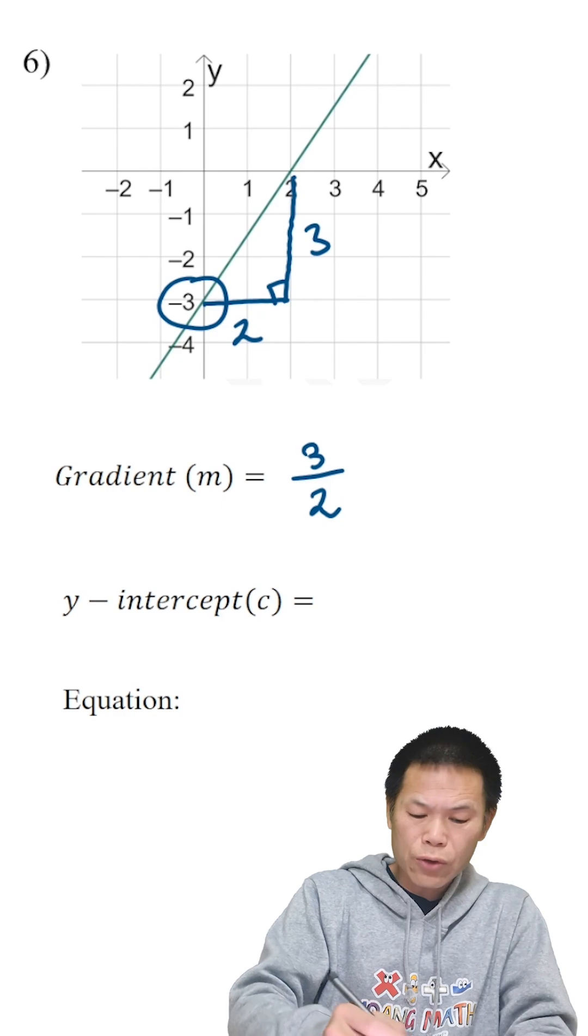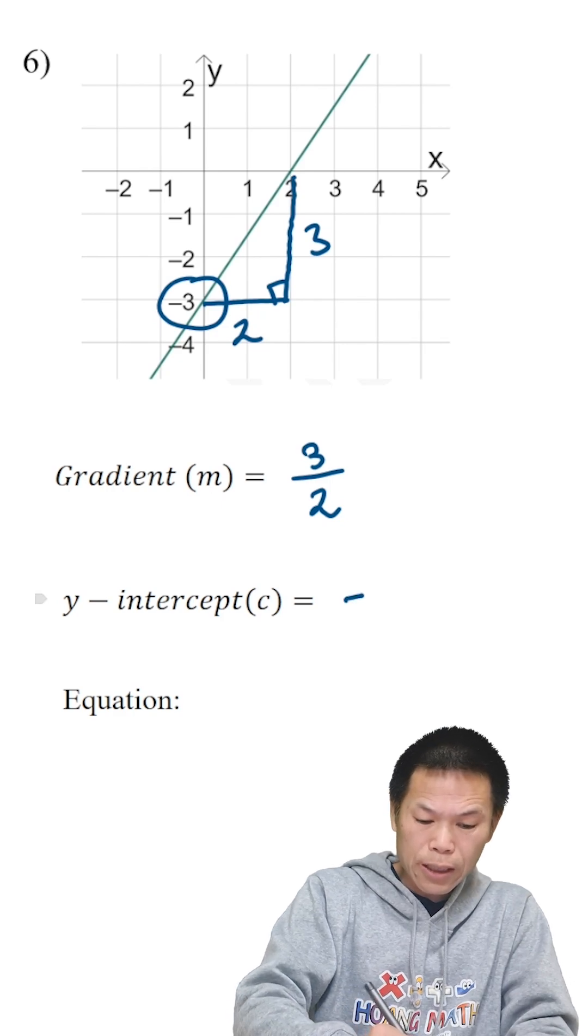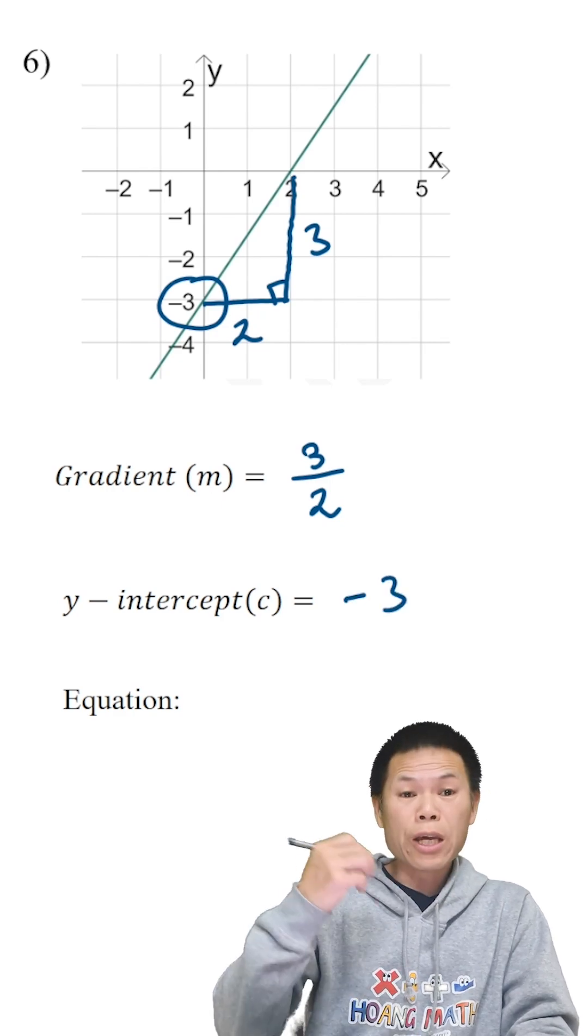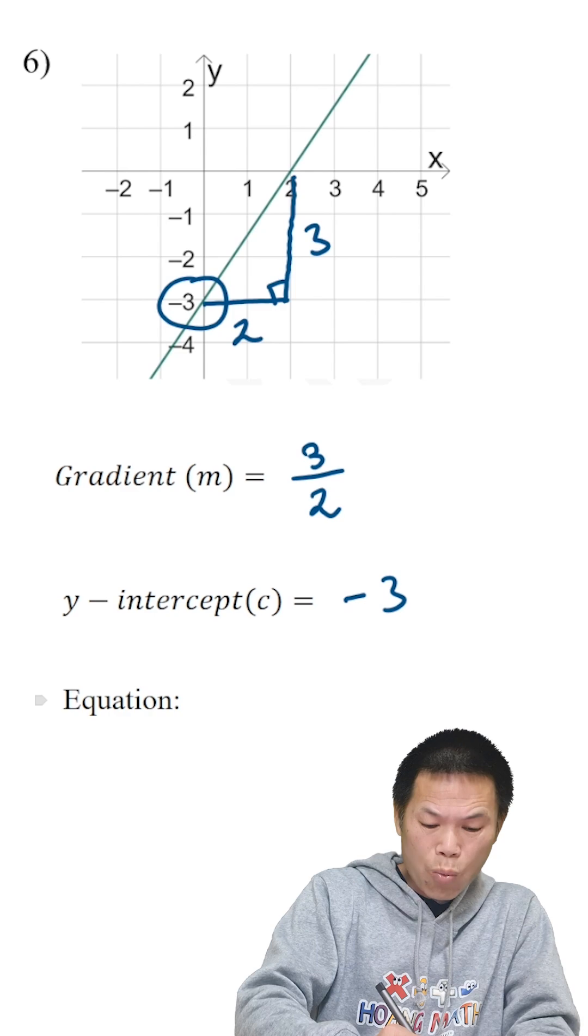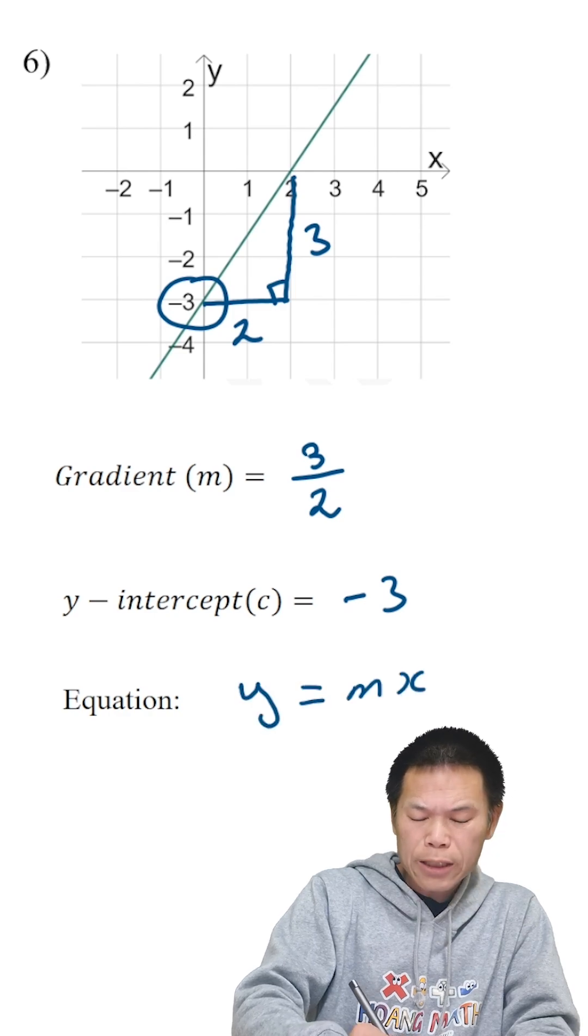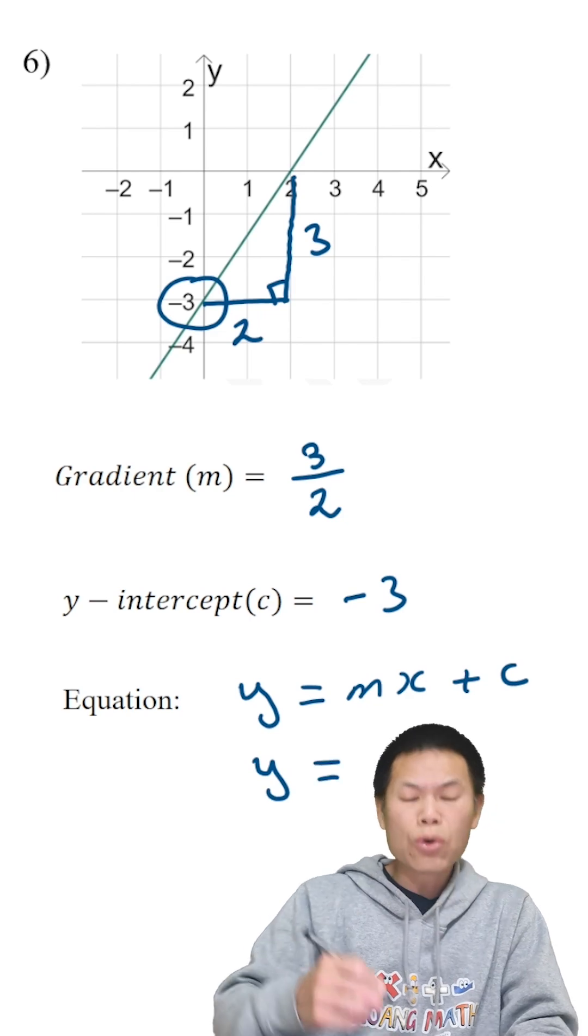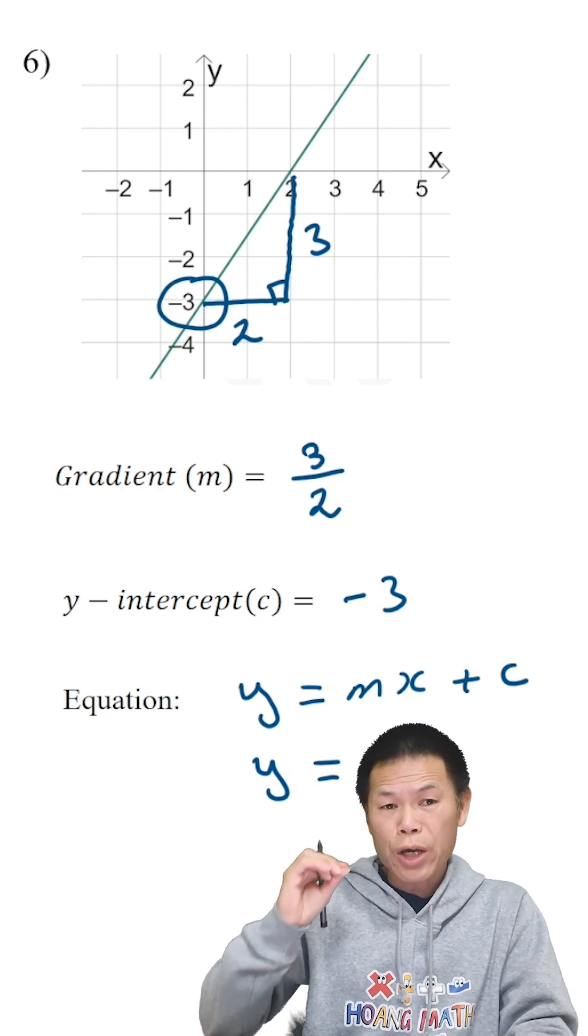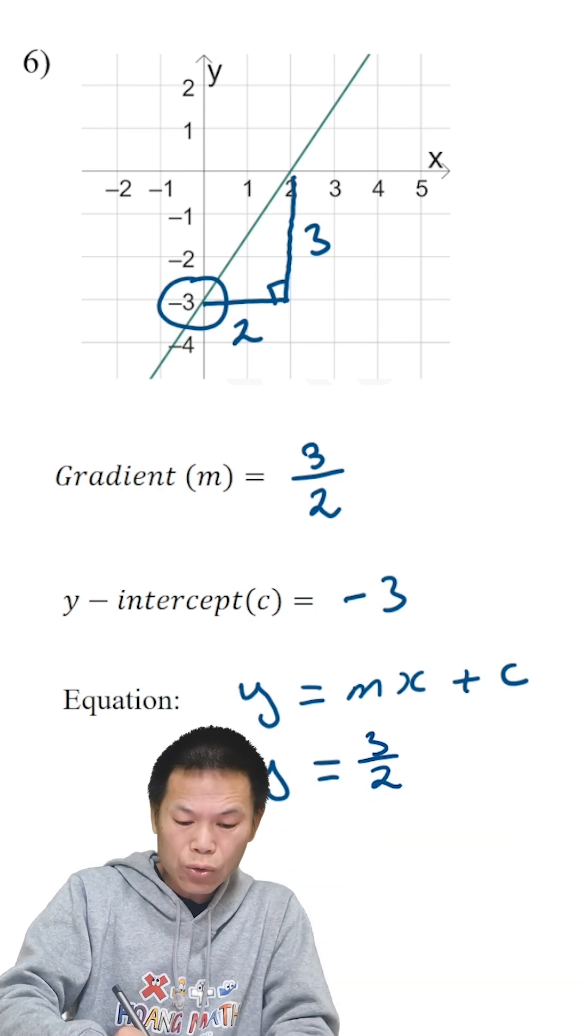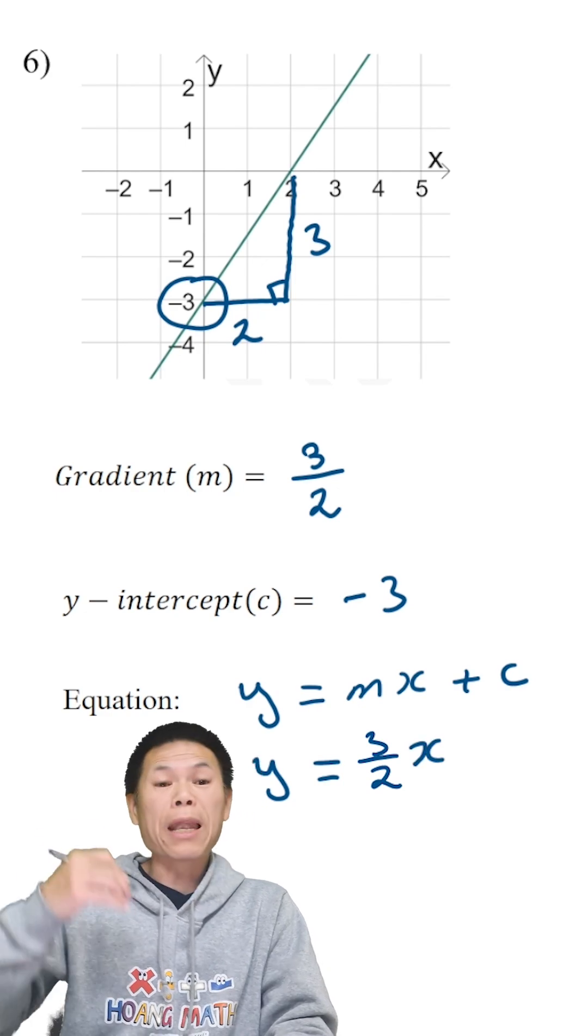Is at negative 3, so c is negative 3. So the equation is, remember, y is mx plus c. So therefore y equals m is 3 over 2. The gradient is 3 over 2 x plus c.